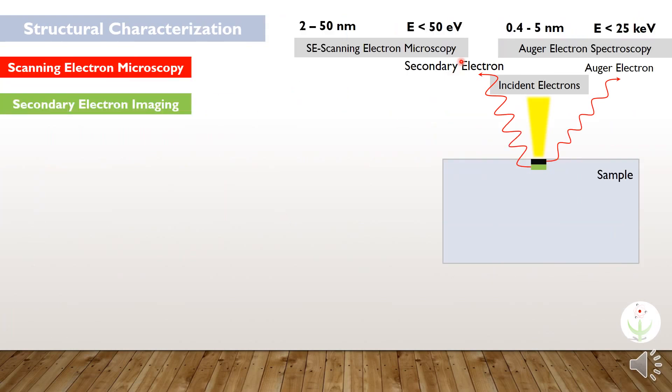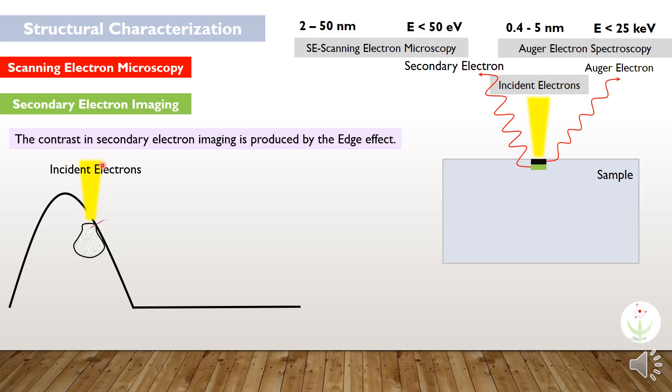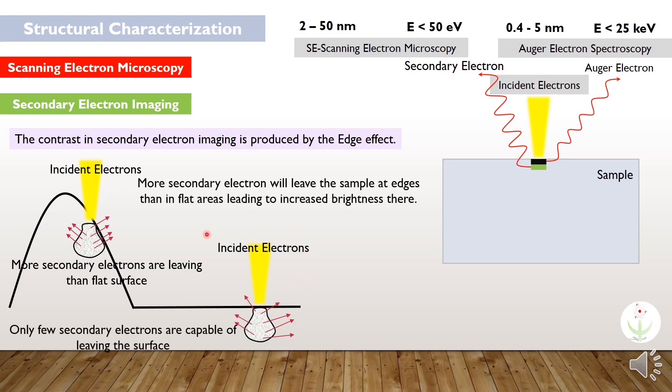These secondary electrons provide information about surface morphology and topography as they are coming from the top few nanometers. Now, the question is how do secondary electrons produce dark and white contrast in the images? The answer is the edge effect. To explain this effect, let's imagine a surface having edge and a flat part. When high energetic electrons strike the edge part, you can see how electrons are emitting from the surface. But in case of flat surface, only few electrons are capable of leaving the surface. That is why more secondary electrons leave the sample at edges than in flat areas leading to increased brightness there.